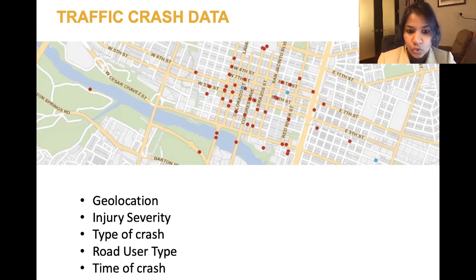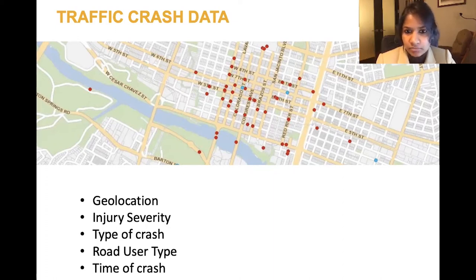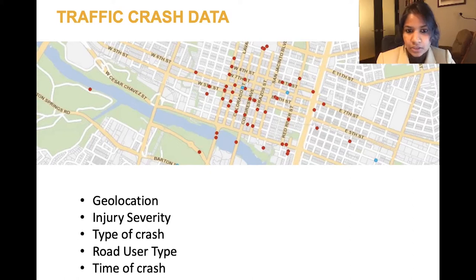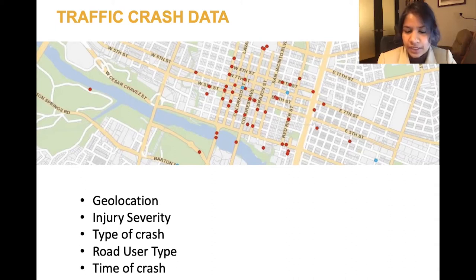We also know what type of crash it was on the basis of interviews with the victims — whether it was a single vehicle crash or whether there were multiple road users involved, and such. So we also know the road user type. All of the victims in this particular case are scooter users, but in certain cases there are additional road users with whom there was a collision.